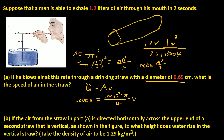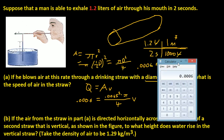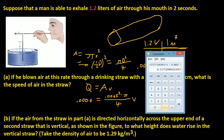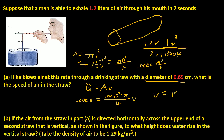Now we just multiply it out and solve for v. We take 0.0006 times 4, divide by pi, then divide by 0.0065 squared. So the velocity equals approximately 18.1 meters per second.